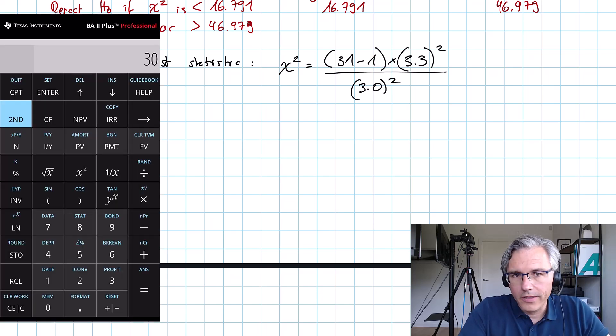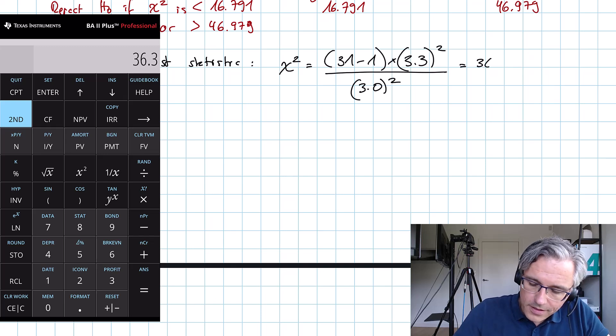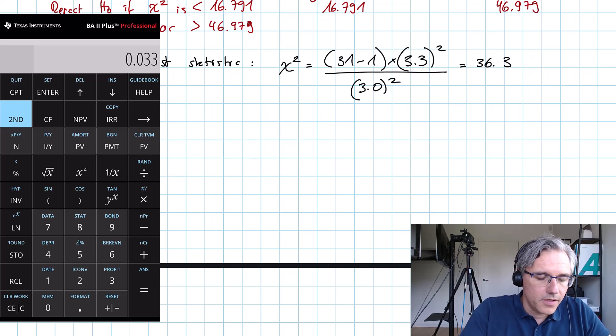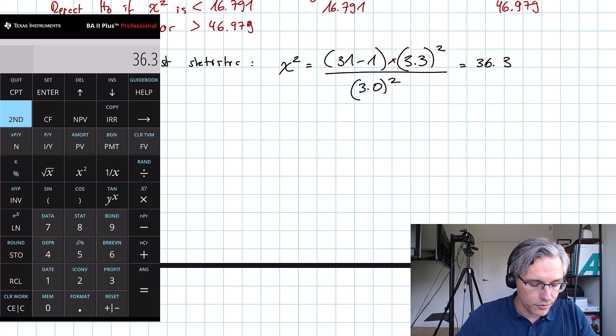30 times 3.3 squared divided by 3 squared equals 36.3. Let me show you that if we did the same thing using decimals, we would also be okay. I would have 0.033 squared times 30 divided by 0.03 squared, that's my 0.0009, equals 36.3. The relationship is stable.